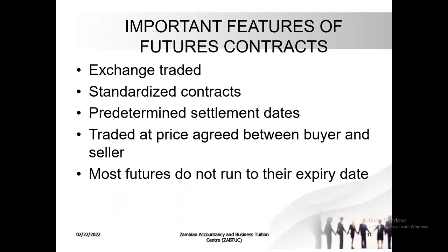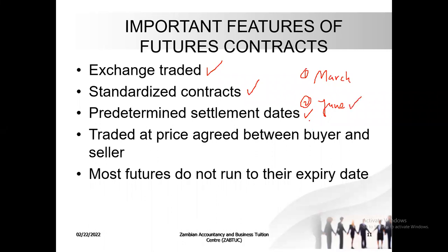What are the important features of futures contracts? They are exchange-traded, they are standardized, and they have predetermined settlement dates. For instance, in the question we did, we had those expiring in March and those expiring in June — and we chose the June ones. The price is agreed between buyer and seller — the exchange puts up the price and you pick the price.